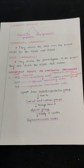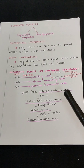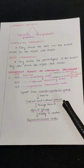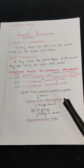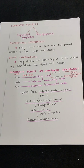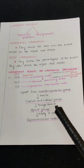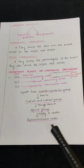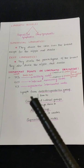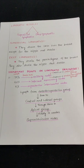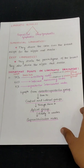Lymph from the anterior and posterior groups of axillary lymph nodes passes to the central and lateral groups, and through them to the apical group. From the central and lateral groups, they pass to the apical group and finally reach the supraclavicular nodes.